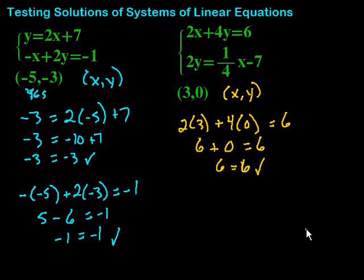Okay. So, then we go to the second one. Let's see what we've got here. 2 times y. So, that's going to be 2 times 0. Because that's our y value. Equals 1 fourth times x, which is 3 minus 7. Okay. Simplify.